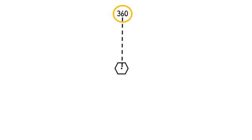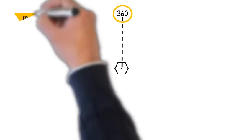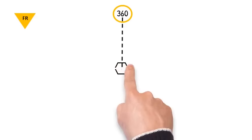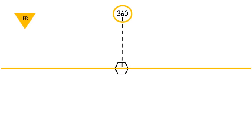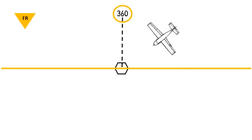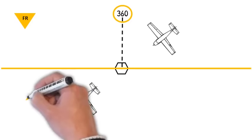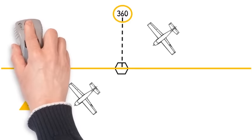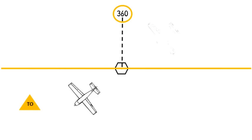Using that same example and continuing with 360 on the OBS: we've got a FROM flag displayed on the CDI, which means we're in the area where the radial extends from the VOR in the direction of 360. In this example we're flying southwest, and if we continue flying southwest — disregarding the CDI needle — as we cross the VOR or go south of that yellow line, at some point we're going to enter the area where the TO flag will become activated, demonstrating that we need to get back to the area where the 360 radial exists extending northbound.